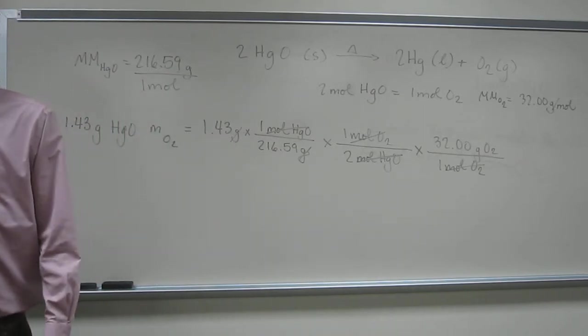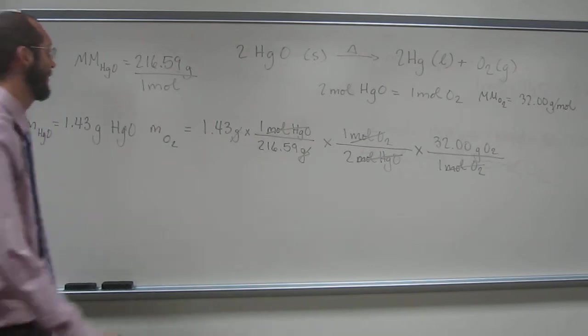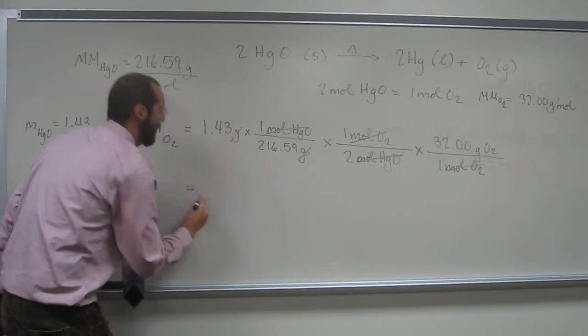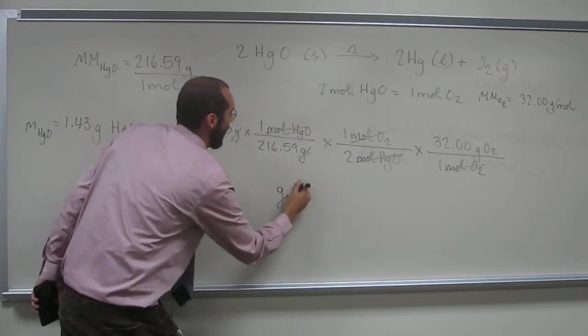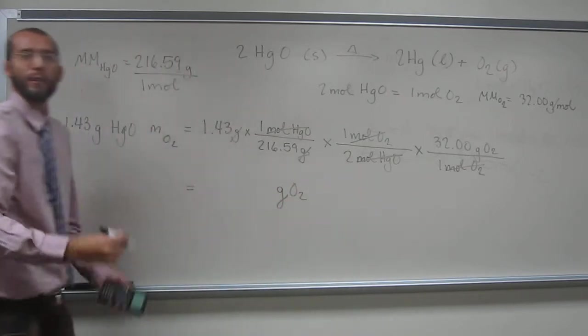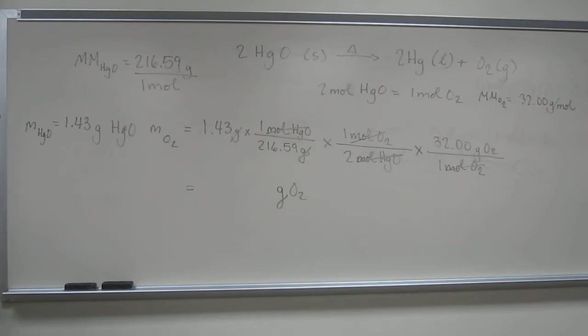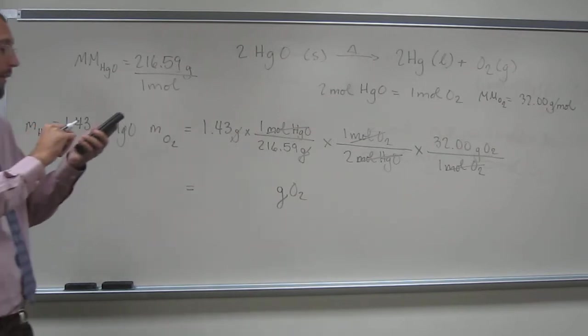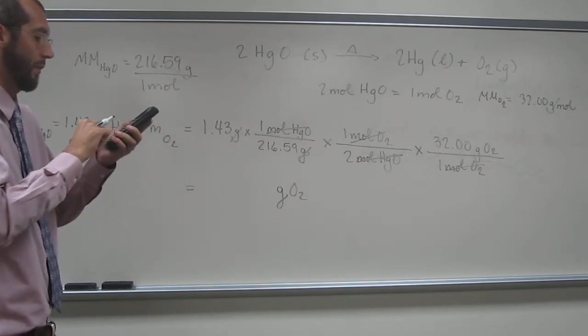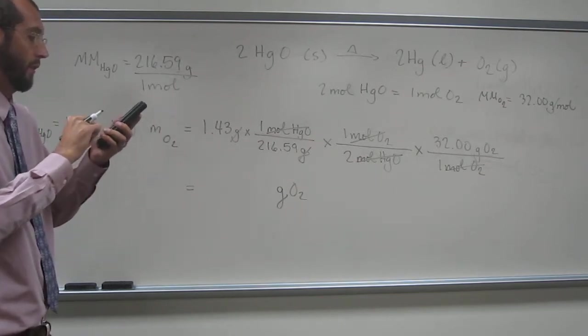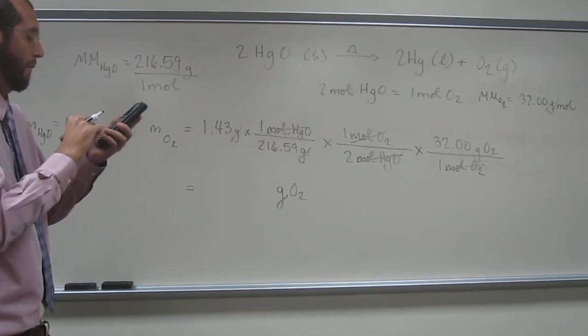At least placate me, guys. Yes. So if we do that, what are our units here? Grams. Grams of O2. Let's calculate it now. So 1.43 times 32 divided by 216.59, divide that number by 2.